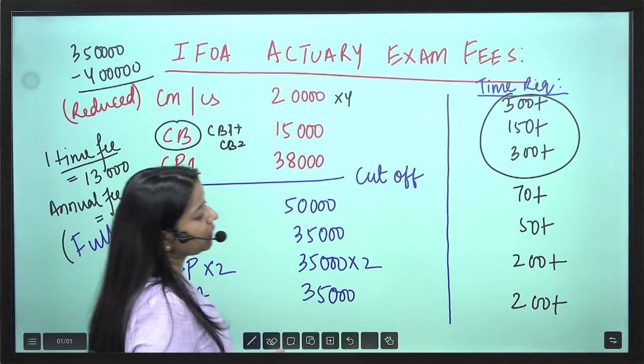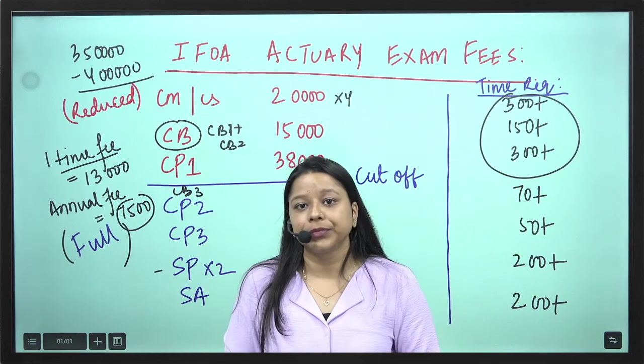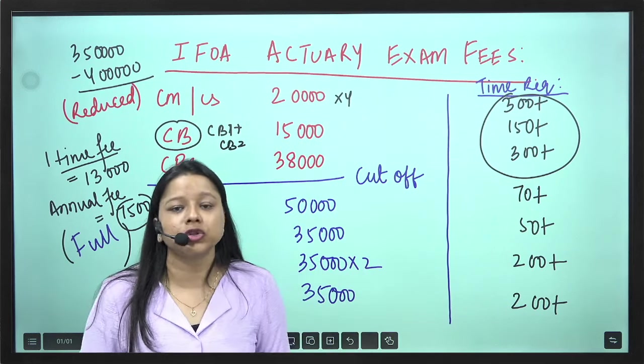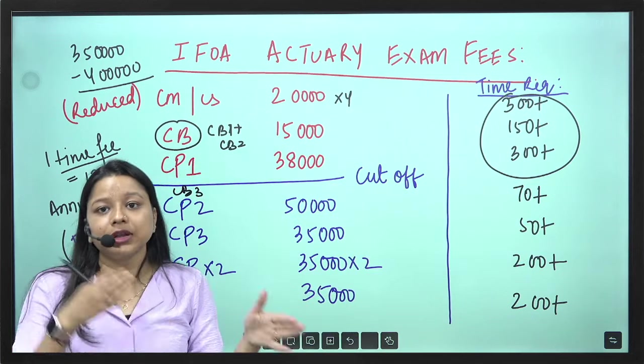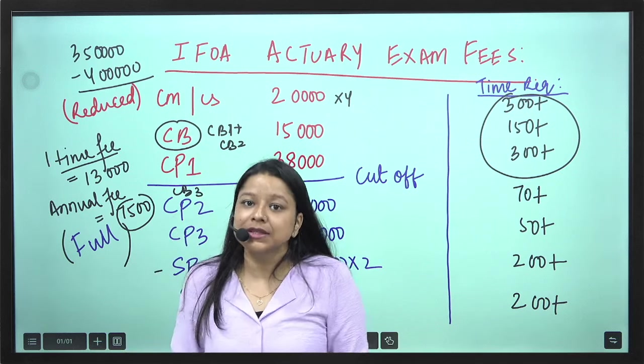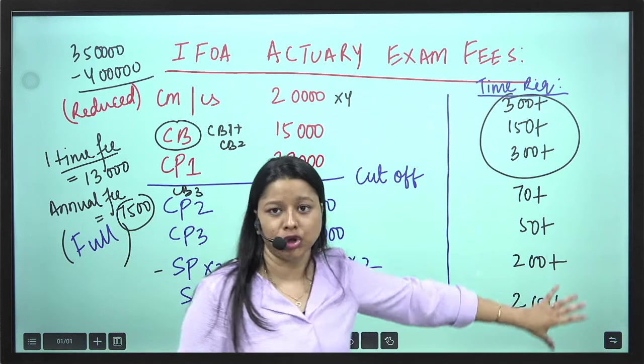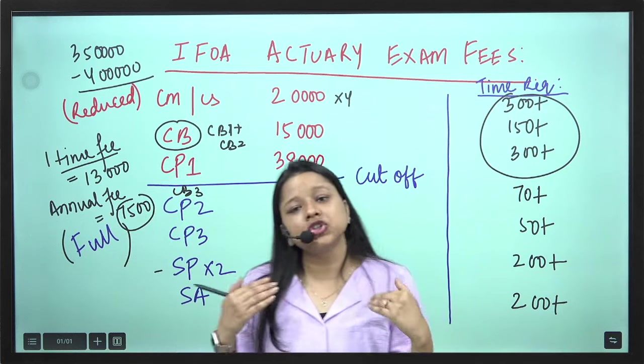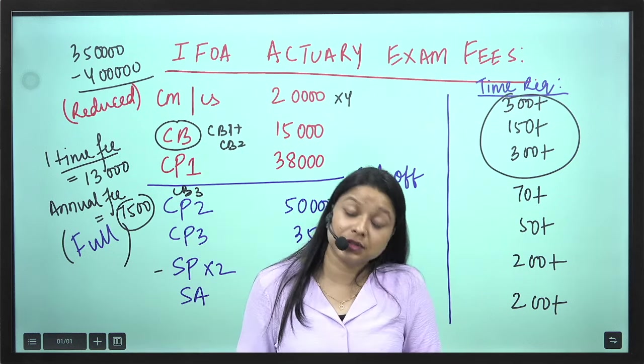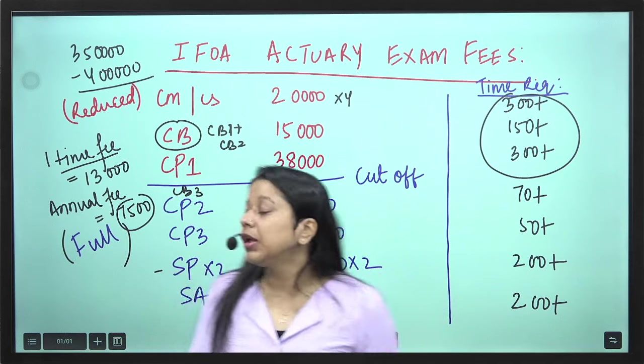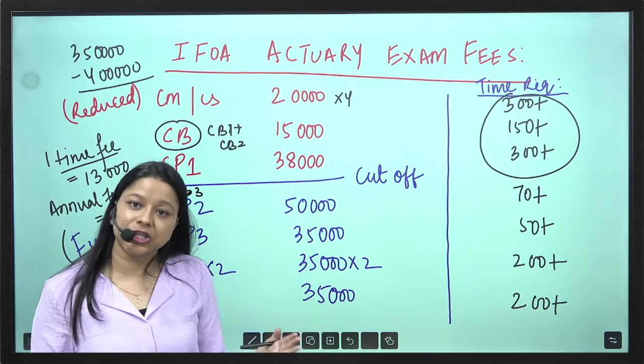SP and SA papers needs 200 plus hours each depending on... So it again depends on you. So this is the required time. The exams happen every 6 months in the month of April and September. So you have good 6 months time to give this much of time to each paper which students easily give. There are students who are clearing 2-2 papers, 3 papers in fact in one single attempt. So this is the entire fee structure of IFOA and the time requirements for each paper.